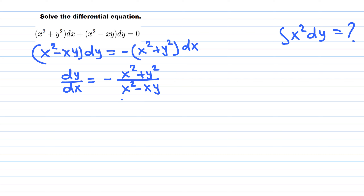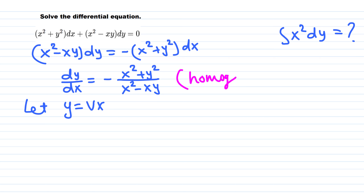For homogeneous differential equations we can make a substitution, and this one turns out to be separable afterwards. We substitute y equals vx. This works when the degree on the top and the degree on the bottom are the same — that's the homogeneous case — and then this substitution works.